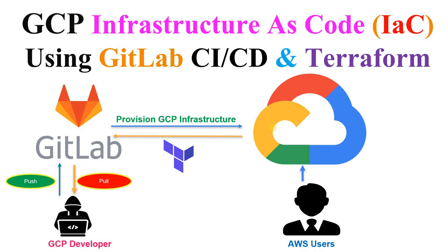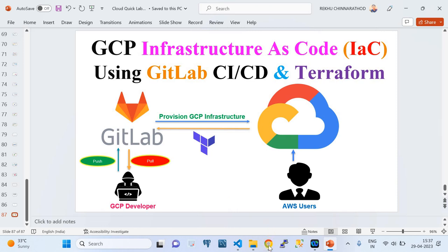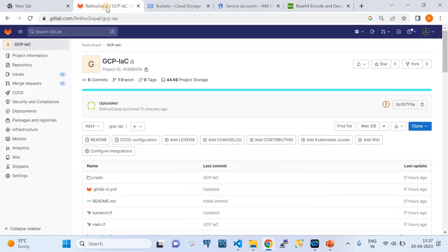I'm going to quickly walk you through two steps. First, how I set up the required repository and configured the required variables on that repository at the GitLab side. Then I'll walk you through the code required for this demo, and we're going to see how we are achieving the required infrastructure as code using Terraform.